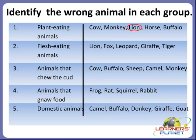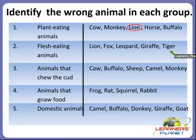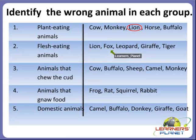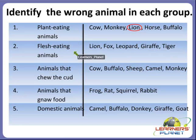Now the next question: the flesh-eating animals. Try to identify the wrong animal — the one which is not a flesh-eating animal. Which are the flesh-eating animals? Lion, fox, leopard, tiger — so which is the wrong animal? Giraffe. Yes, because giraffe is a plant-eating animal. Giraffe is the wrong animal in this group.